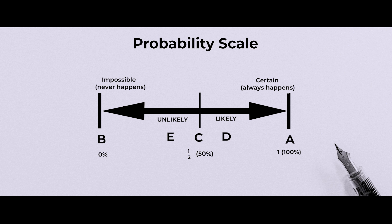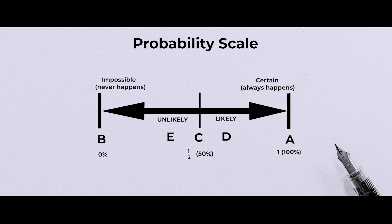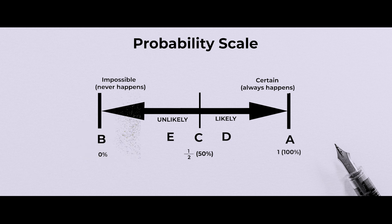Can you look at A? It is written as 100% and it is written as 'certain.' Why is it written as certain? Because here we put an event which will happen for certain. And can you look at B? In B, you can see it is written as 0%. On the top, you can see it is written as 'impossible.'